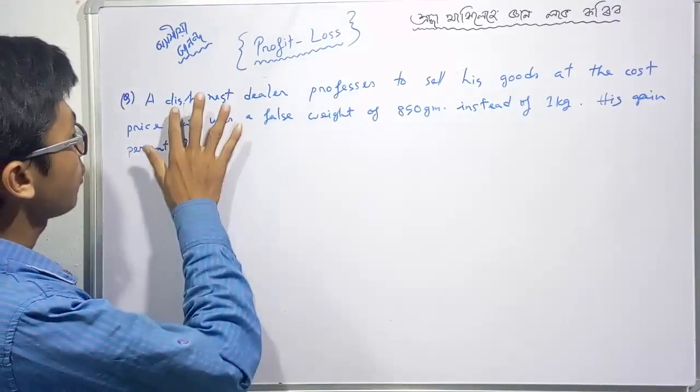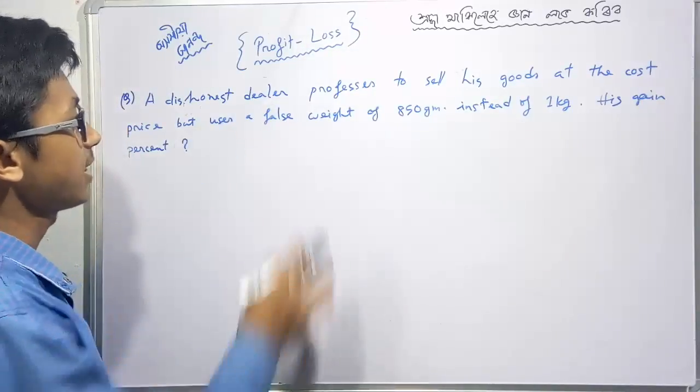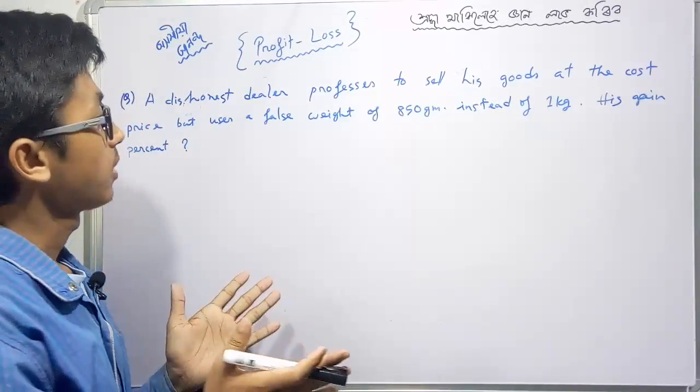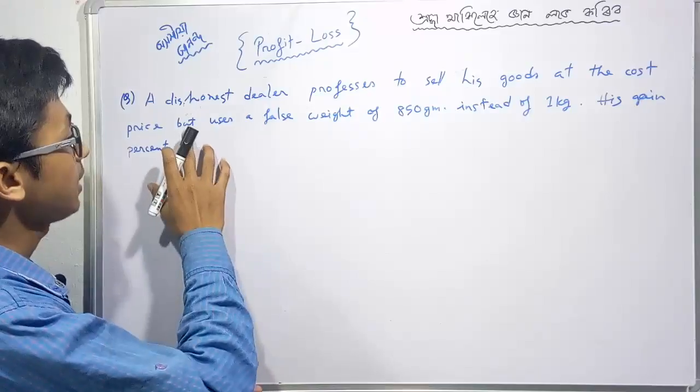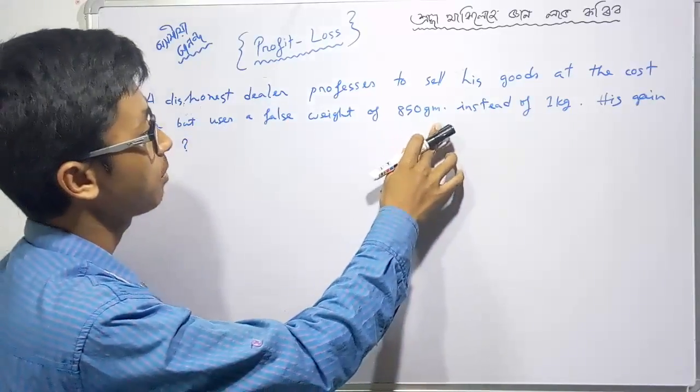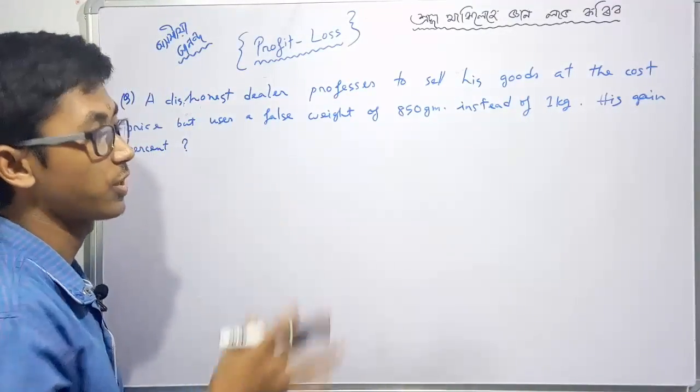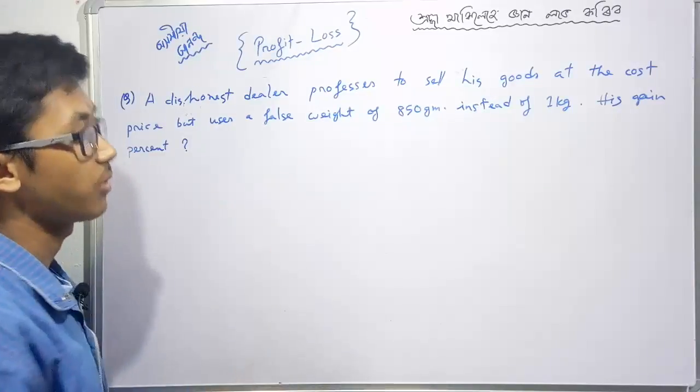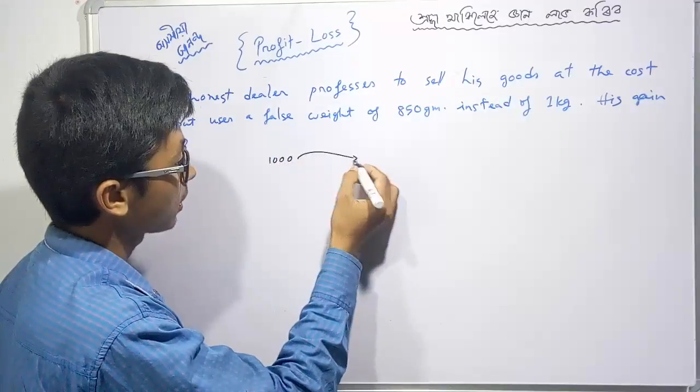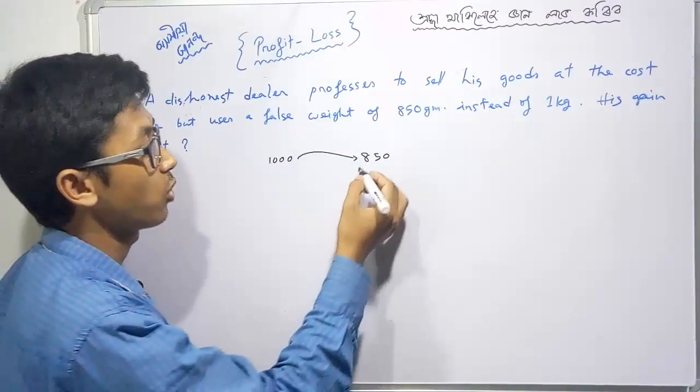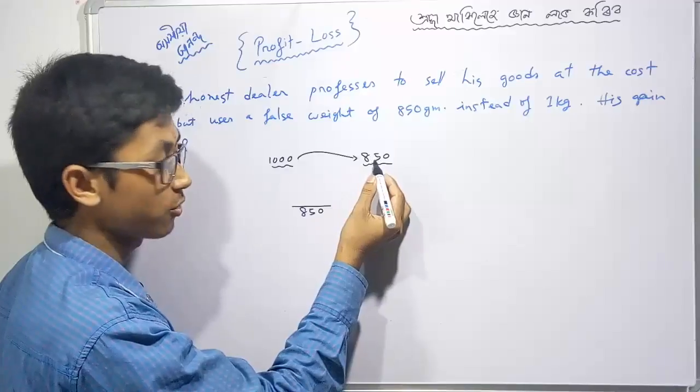Another problem: A business dealer professes to sell his goods at cost price, but uses a false weight of 850 grams instead of one kilogram. Instead of 1000 grams, he gives only 850 grams. Find his gain percentage.